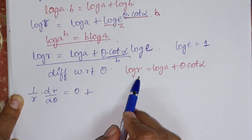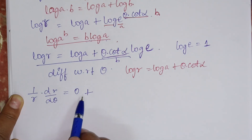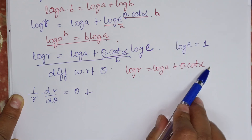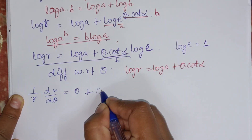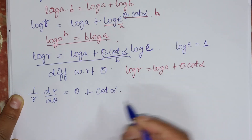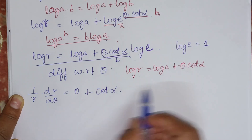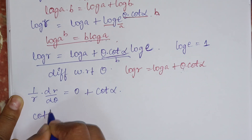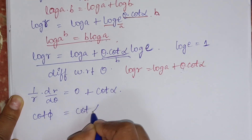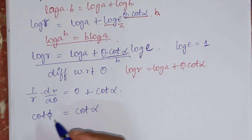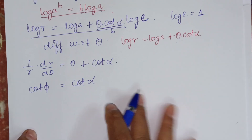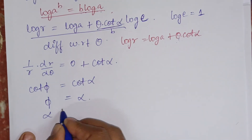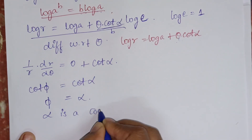Differentiating log R gives 1 over R times dr by d theta, equals differentiation of log A which is 0, plus differentiation of theta into cot alpha which gives cot alpha — since theta differentiates to 1 with respect to theta. So this can be written as cot phi equals cot alpha.